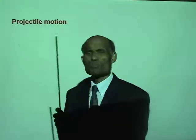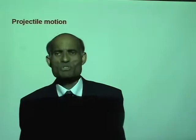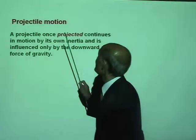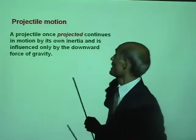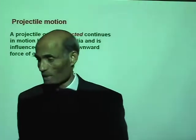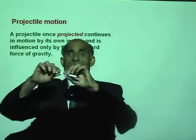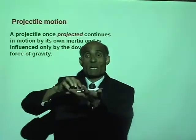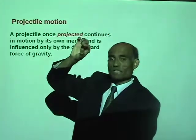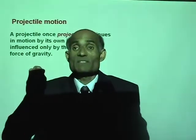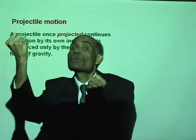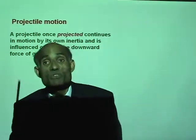Let's now talk about projectile motion. A projectile, once projected, continues in motion by its own inertia and is influenced only by the downward force of gravity. Any object dropped is actually a projectile. If I throw this pencil horizontally, that's a projectile. Once you release it, the only force on it is the force of gravity, meaning it keeps falling downward due to gravity.